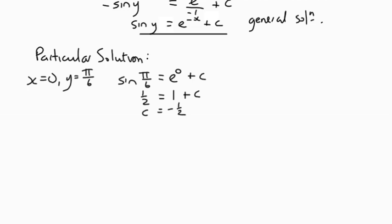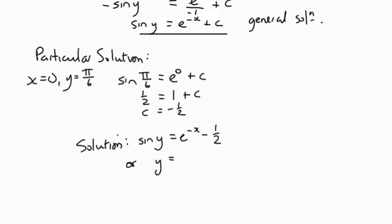Which means that in this case we can say that the particular solution is sin y equals e to the negative x minus a half. Or we could go the full way and say that y is the inverse sine of e to the negative x minus a half.